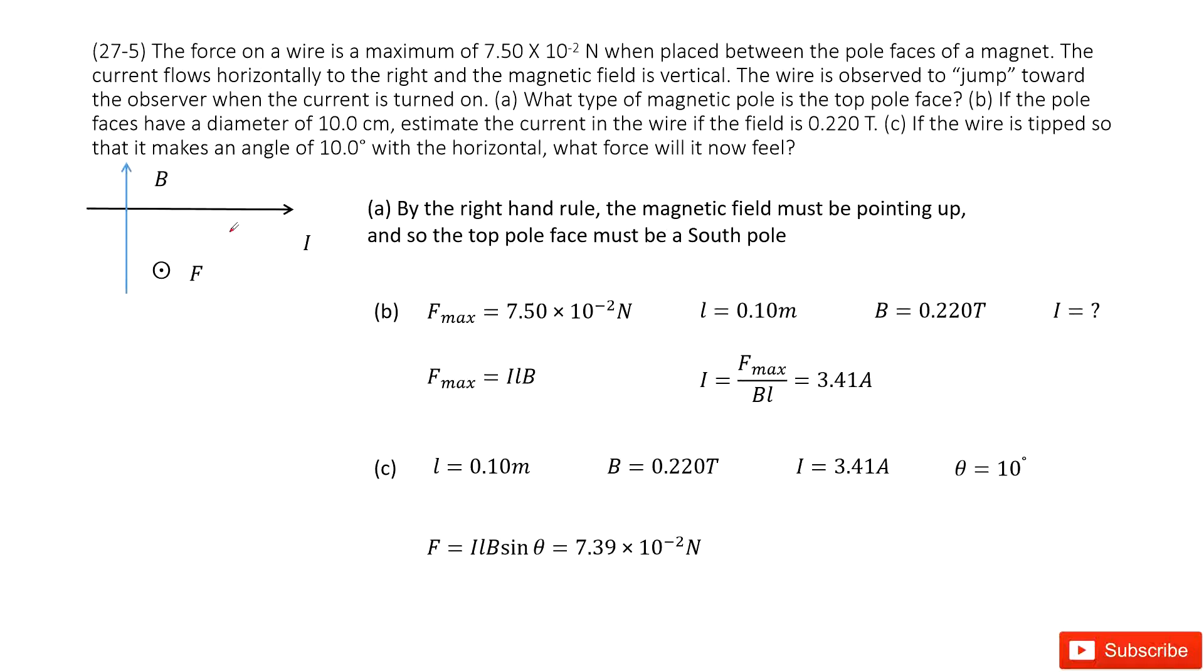So we can see the force, the maximum force is given as 7.50 × 10⁻² newtons. This is placed between the pole faces of a magnet. The current flows horizontally to the right, and the magnetic field is vertical. The wire is observed to jump toward the observer when the current is turned on. What type of magnetic pole is at the top pole face?